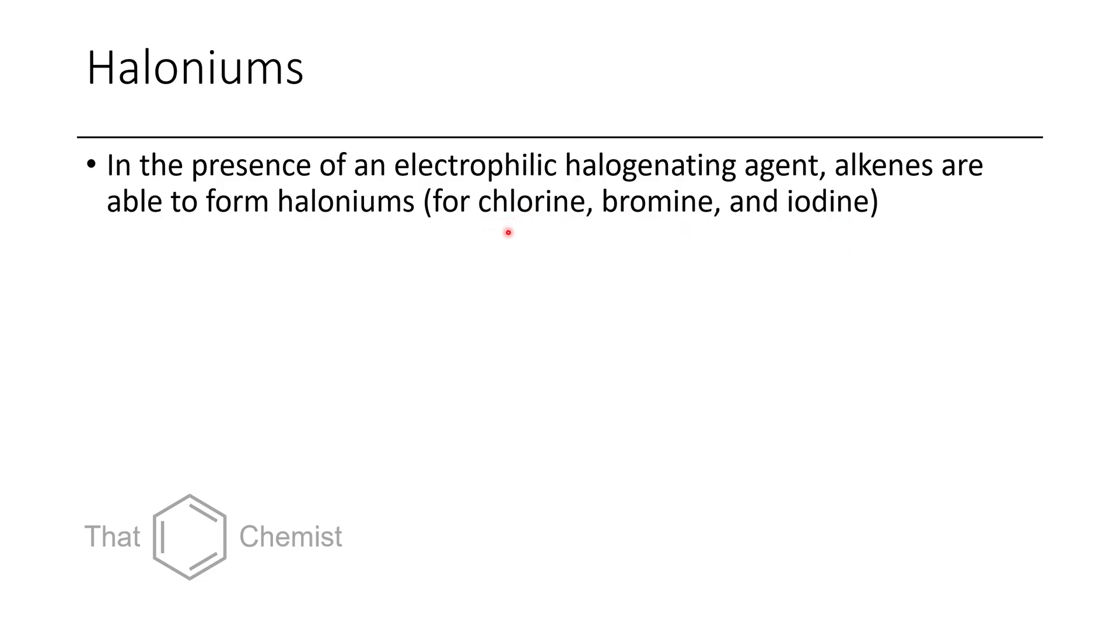However, there's one case where a fluoronium has been prepared by Thomas Lectka's group at Johns Hopkins University. Now it's quite controversial in the fluorine chemistry community, and it's really like a fluoride anion connected to two carbocations, and it's just kind of hot potatoing back and forth. But in the crystal structure, the fluorine is equidistant between both carbon centers, so it still technically could be considered a fluoronium.